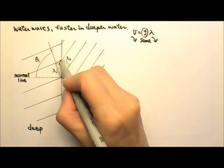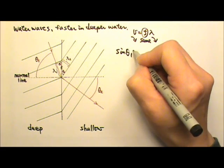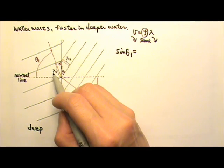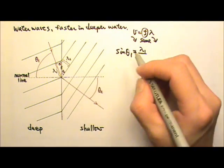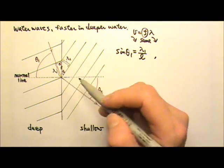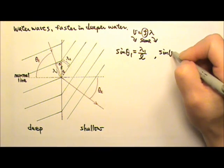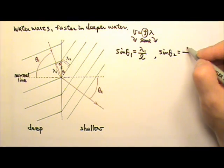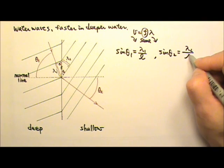So for this right triangle, we can write sine theta 1 equals the opposite side divided by the hypotenuse. The opposite side is lambda 1. The hypotenuse for this right triangle is L. Same thing here. For that right triangle, we can write sine theta 2 equals the opposite side, which is lambda 2, divided by the hypotenuse, which is also L.